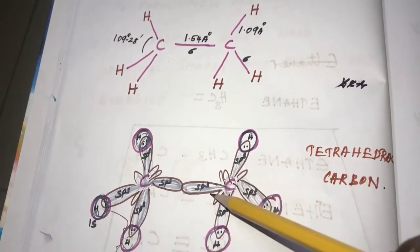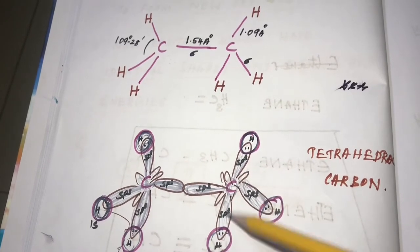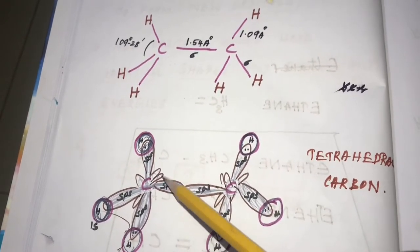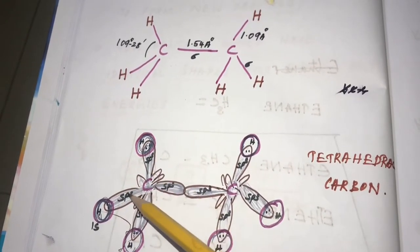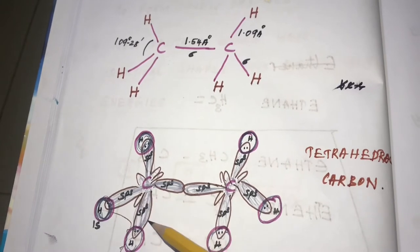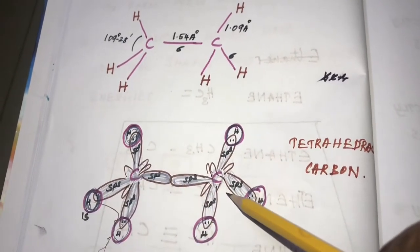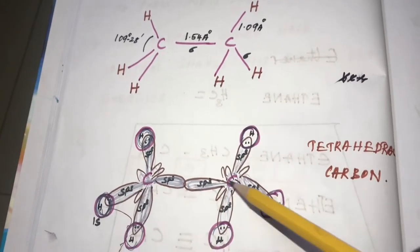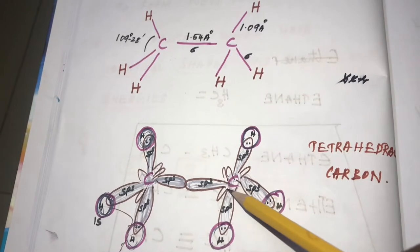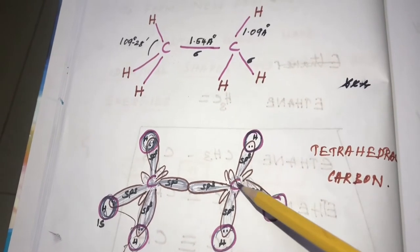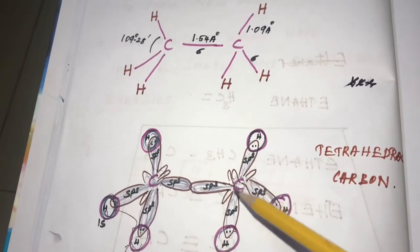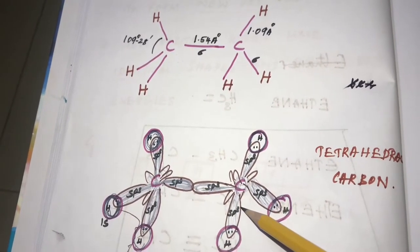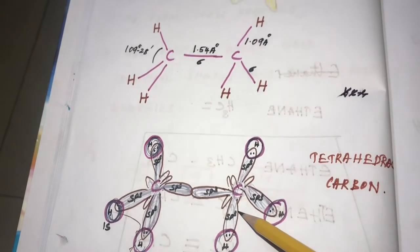Each carbon accounts for 4 bonds — 1, 2, 3, 4 — and similarly for the next carbon. So in ethane, each carbon atom is a tetrahedral sp3 hybridized carbon, making a bond angle of 109° 28'.